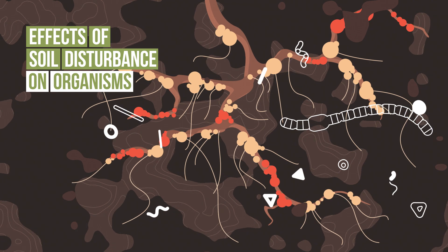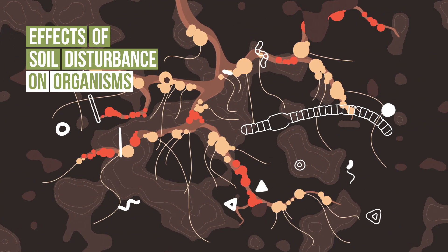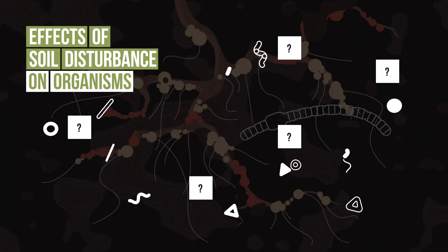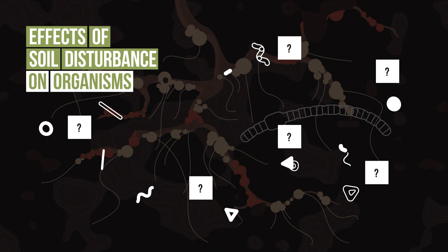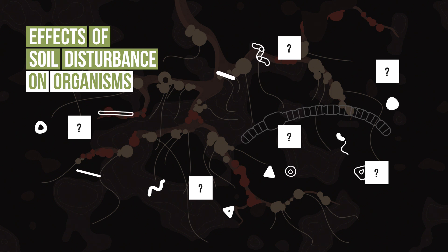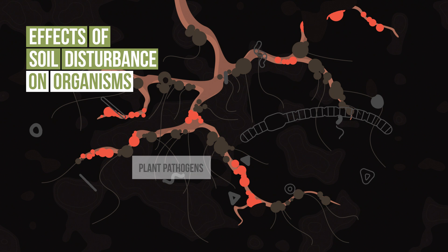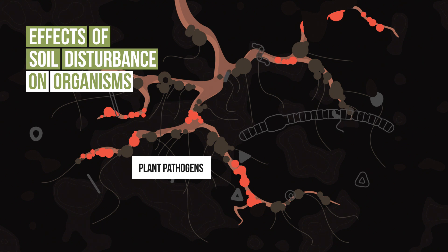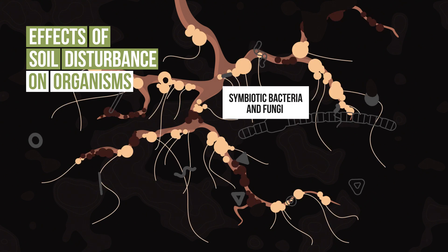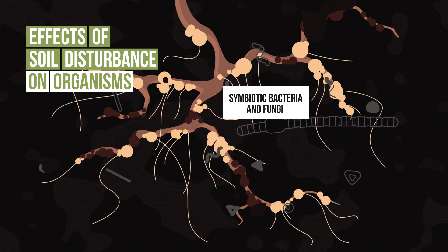Little is known about the effects of soil disturbance on many individual soil organisms because it's difficult to study them in isolation. But organisms such as earthworms, some plant pathogens and symbiotic bacteria and fungi have been studied in more detail in terms of their responses to disturbance.